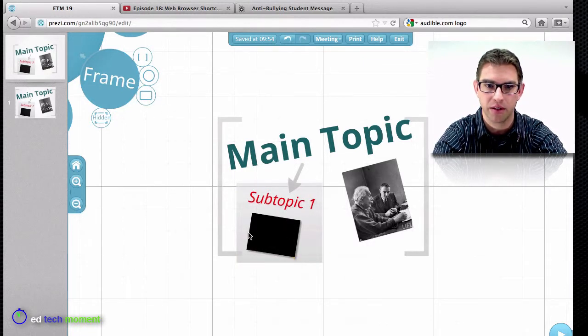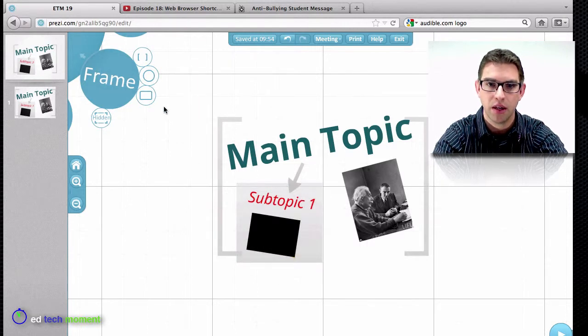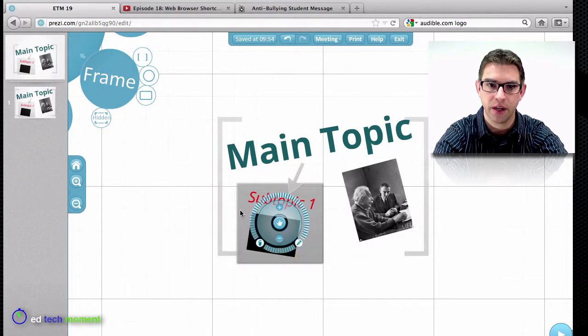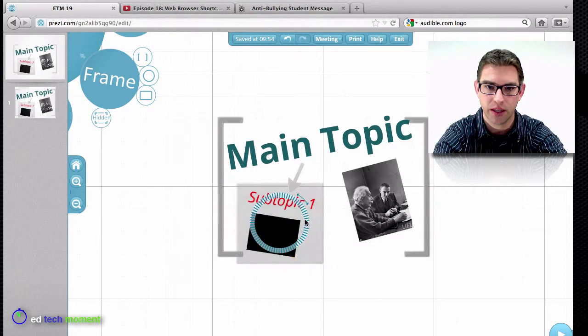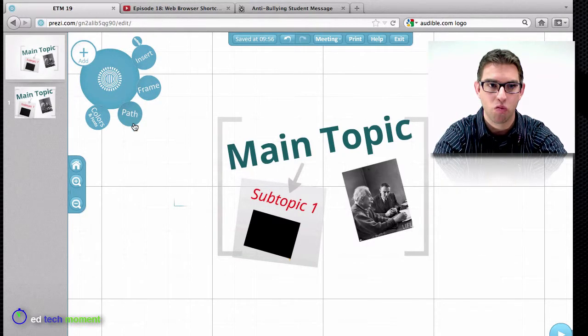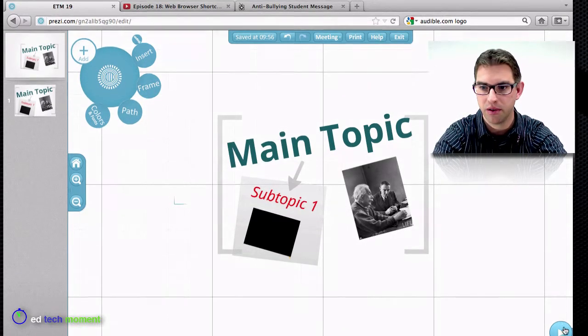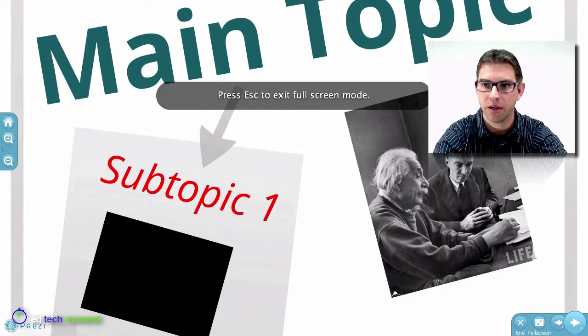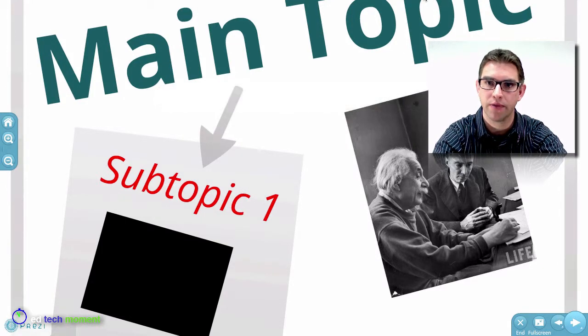I've added a frame around this subtopic, and so now when I click on that frame again I can rotate that whole frame together. But now when I'm in my play mode, I come down to play mode and I click on a frame, it zooms to that frame.